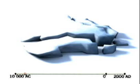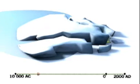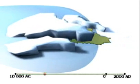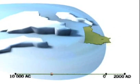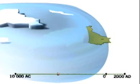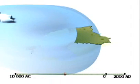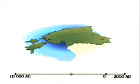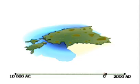This animation shows the development of Estonian peatlands after the last ice age. This course of development started about 12,000 years ago, and today peatlands cover 22% of the territory of Estonia.